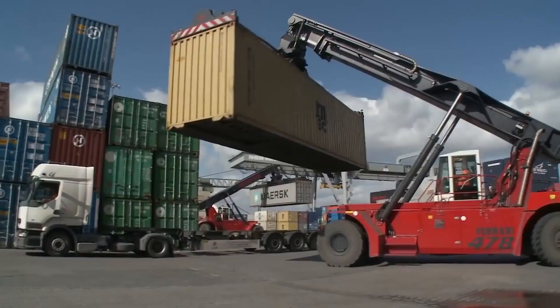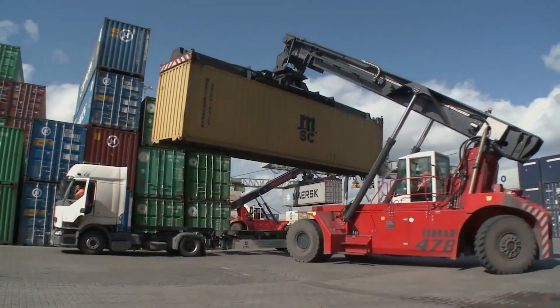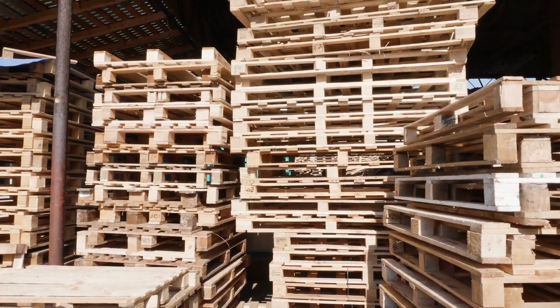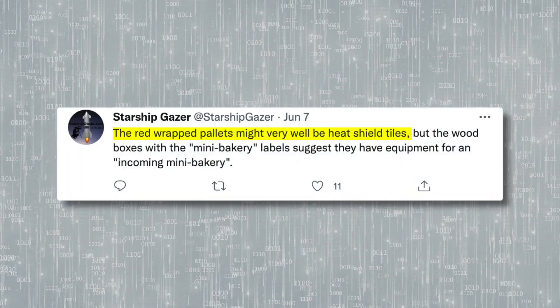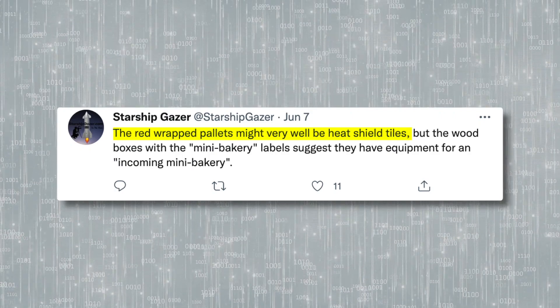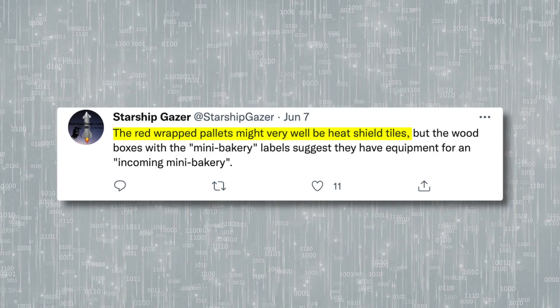It's possible that some of these pallets contain equipment for building a mini facility that will create heat shield tiles. This isn't for certain though, as some people still think it can be a name for the delivery itself, which would mean the pallets are simply filled with tiles from Cape Canaveral. But StarshipGazer thinks that the red-wrapped pallets are most likely heat shield tiles, and the wood boxes with the mini bakery labels could be the equipment that will be used to create the tiles at Starbase.